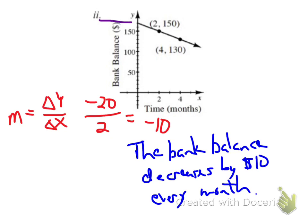Again, looking at our y-intercept, our y-intercept here is $170. So that's when our x-value is zero. At time zero, or when you first put the money in the bank, you have $170.